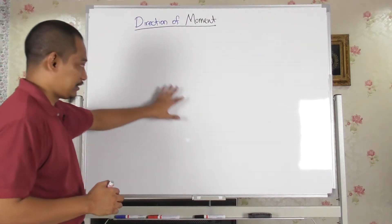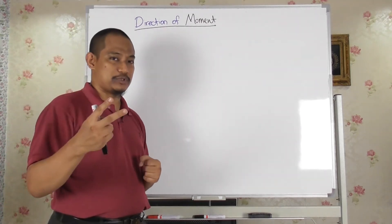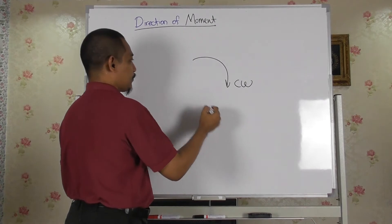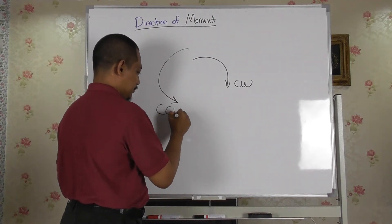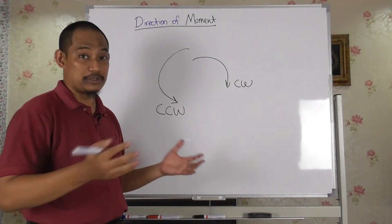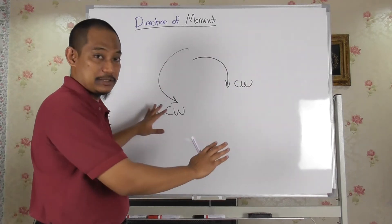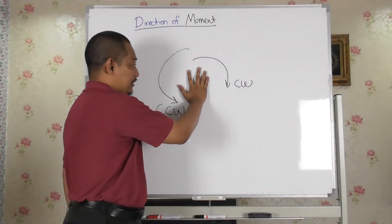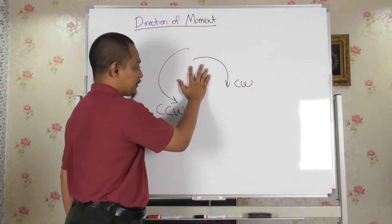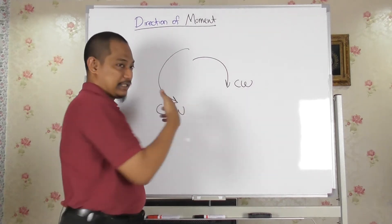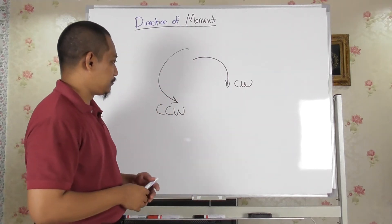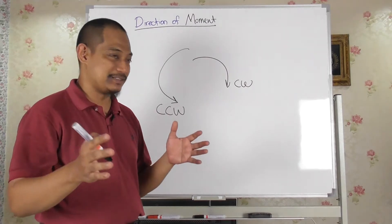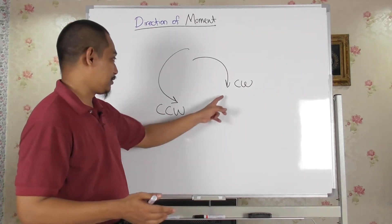In 2D space, for example in this plane of the whiteboard, there are actually only two possibilities of rotation — it is either clockwise or counterclockwise. That's the only two possibilities. Because if you want to rotate something in this plane, it can only rotate two ways: either clockwise or counterclockwise. It cannot rotate any other way. So when the question is a 2D problem, it becomes weird if you answer that it rotates in a different way other than just clockwise or counterclockwise.